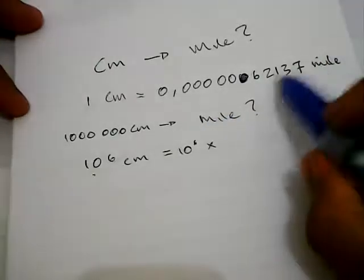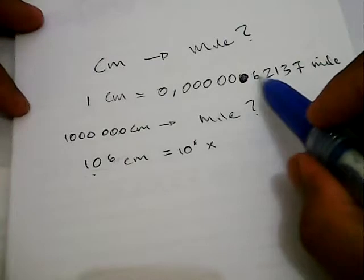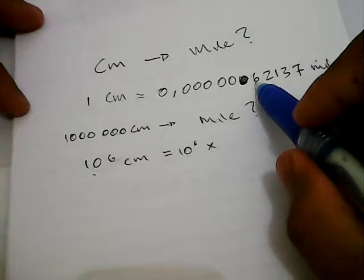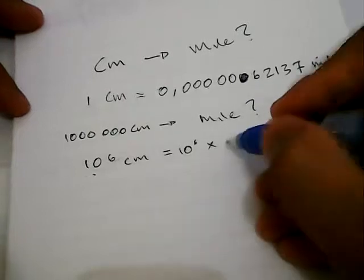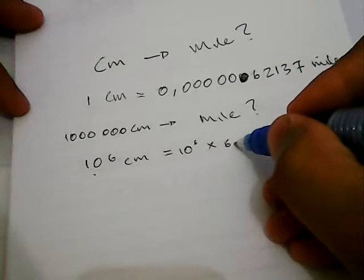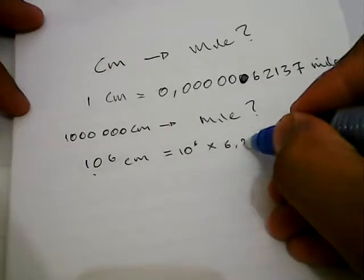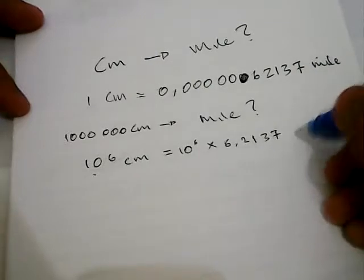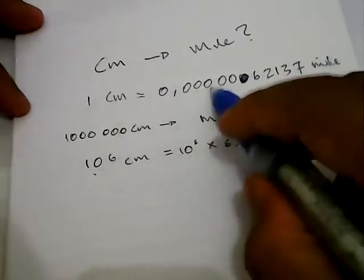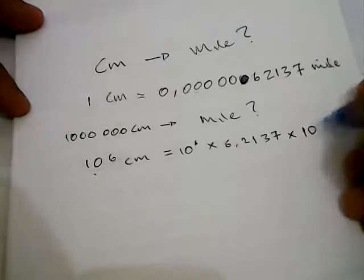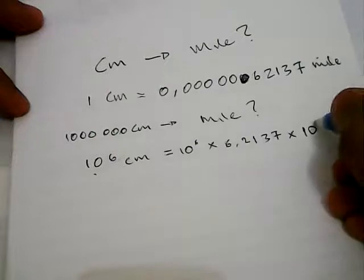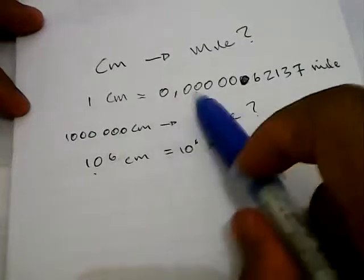So we write 10 power 6 multiplied with 0.0000062137 — that's 6.2137 times 10 to the power of negative 6 — after the decimal point.